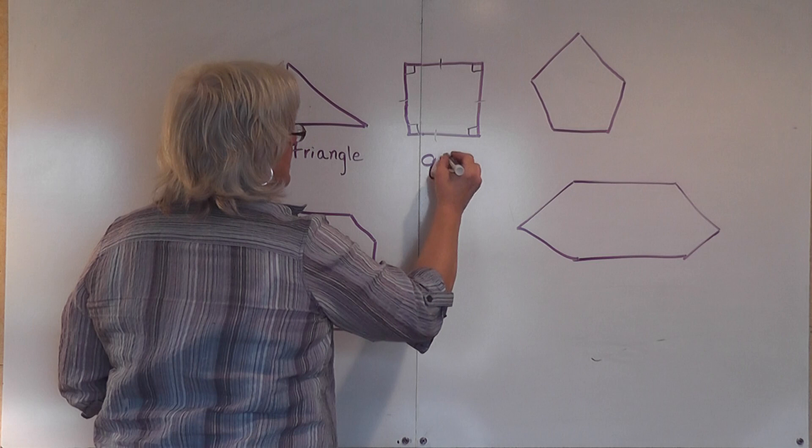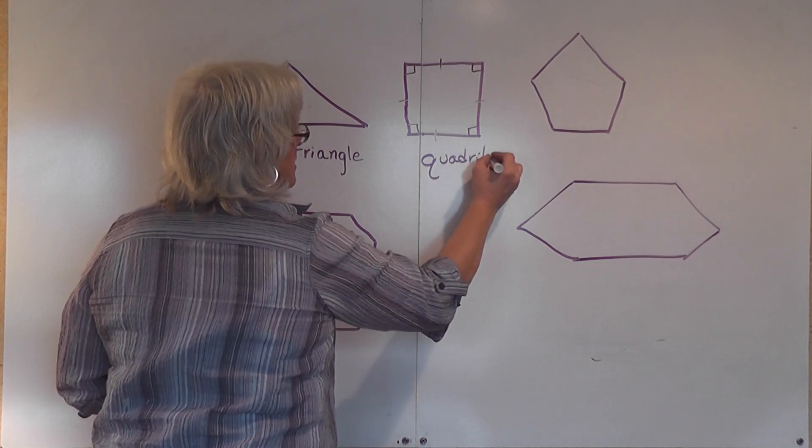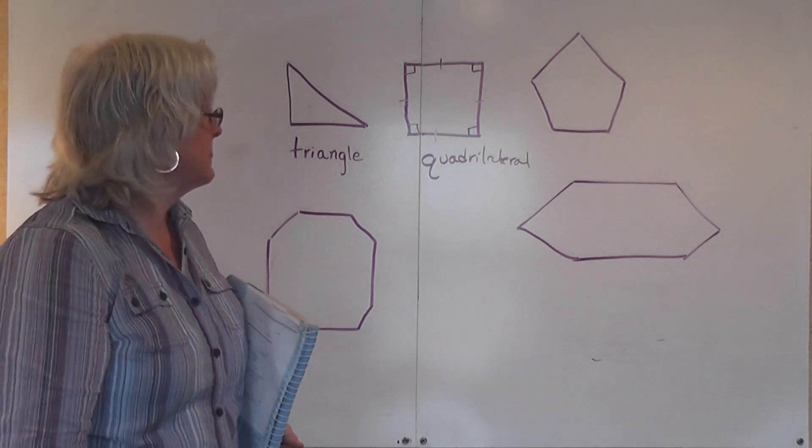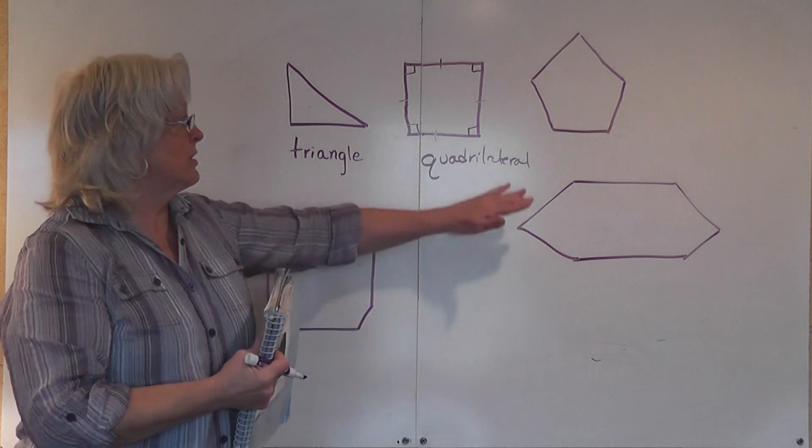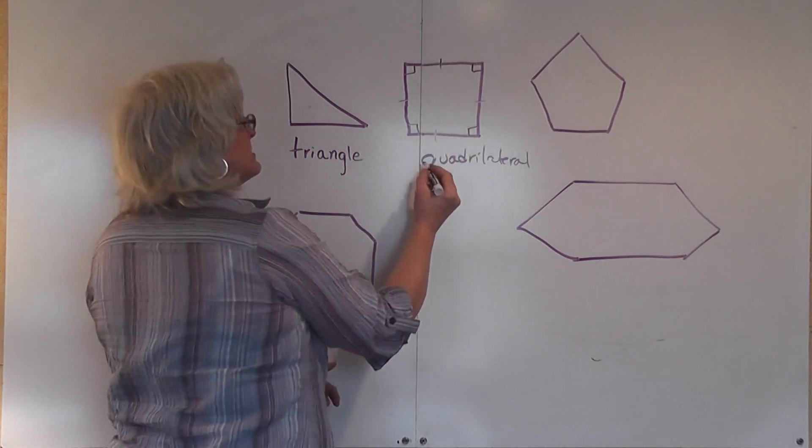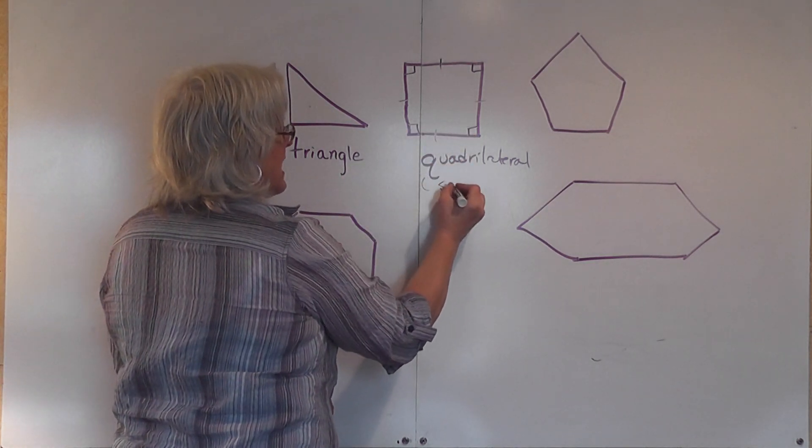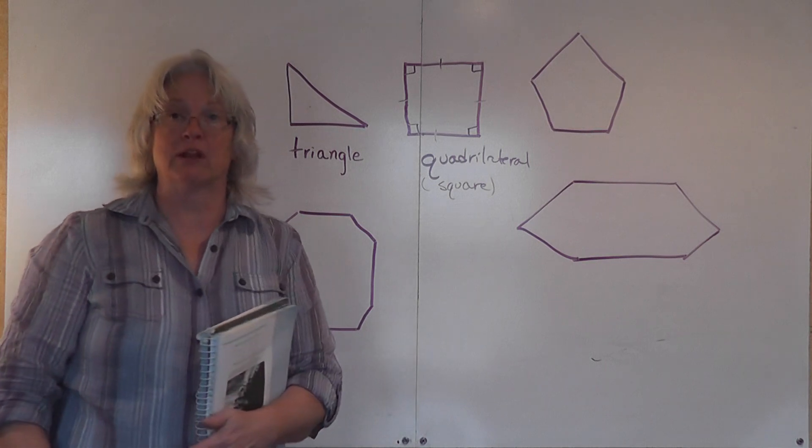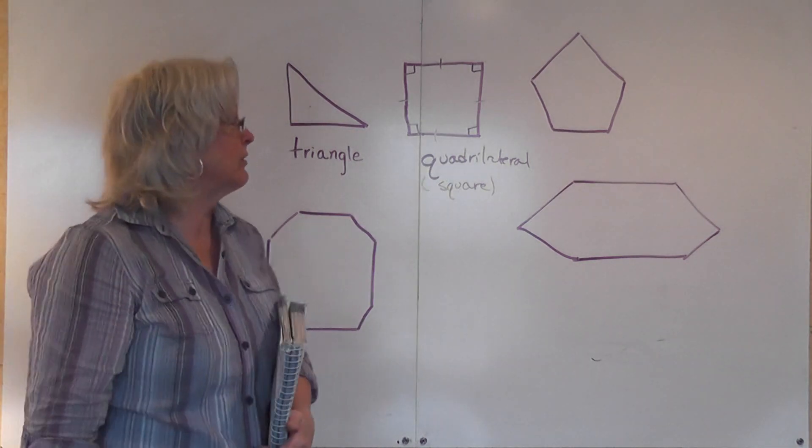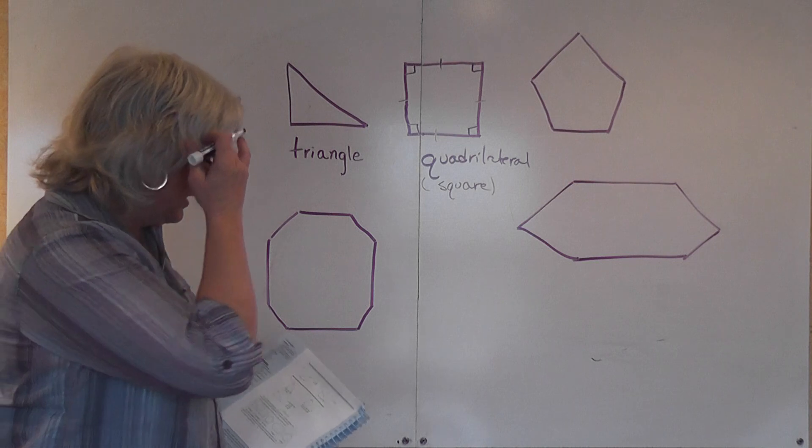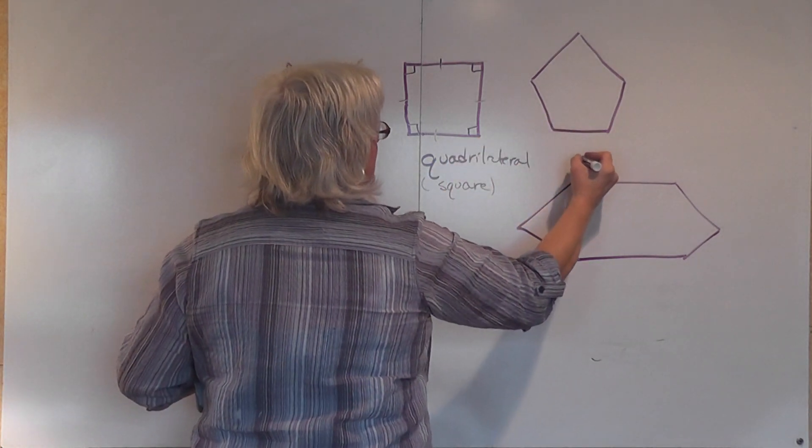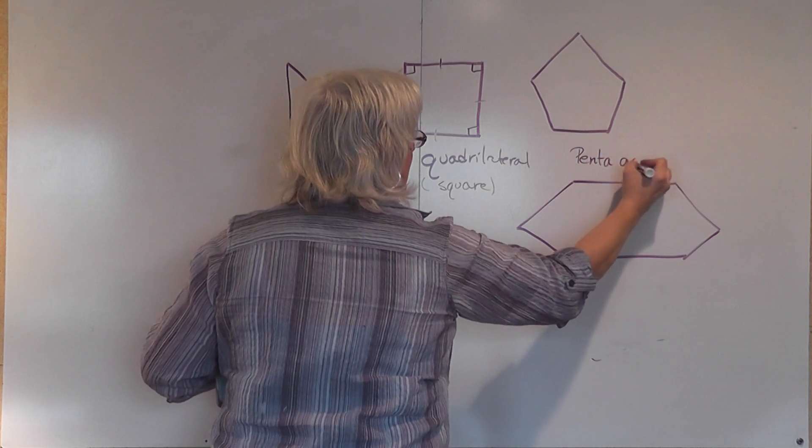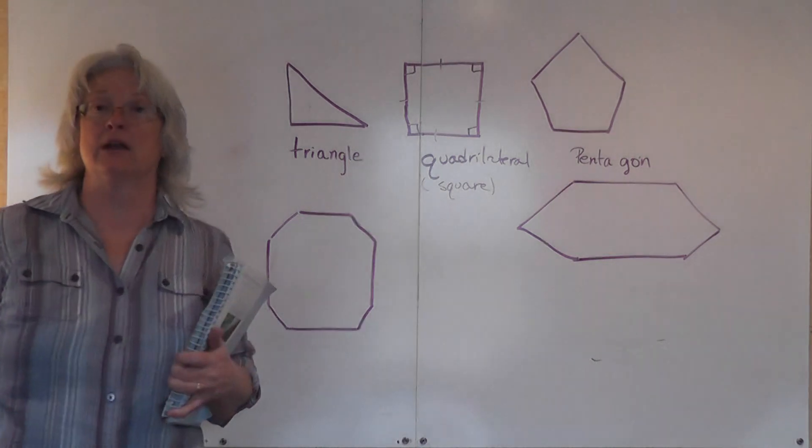When I put these little indicator marks here, telling me that we have four right angles and four equal sides, this is a quadrilateral. Lots of you ride quads—a quad is a four-wheeler. A quadrilateral has four sides. When the sides are the same and the angles are the same, that specific quadrilateral is called a square.